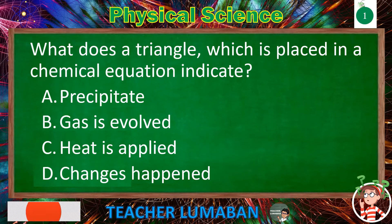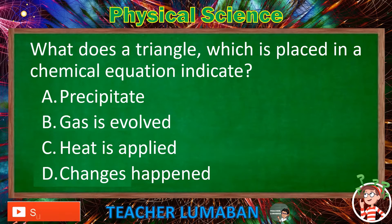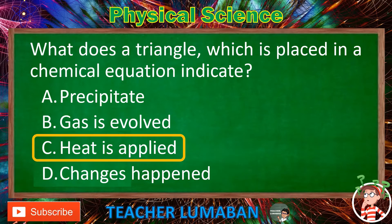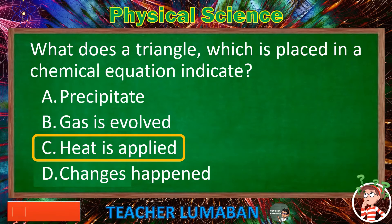The correct answer is Letter C: heat is applied. The triangle placed in a chemical equation indicates that heat is applied.